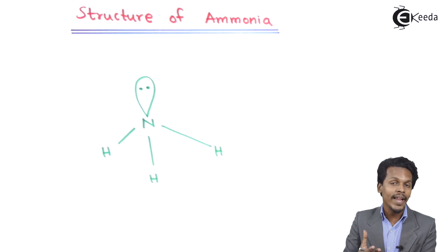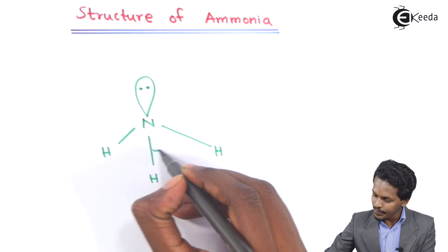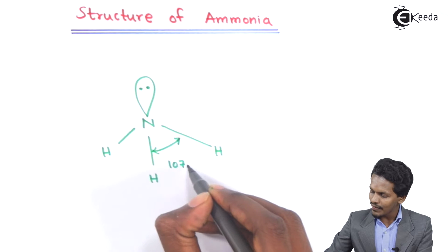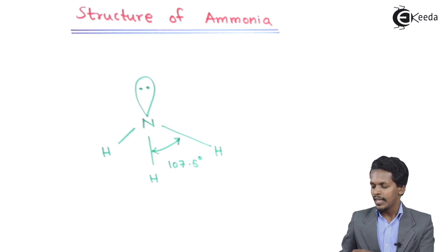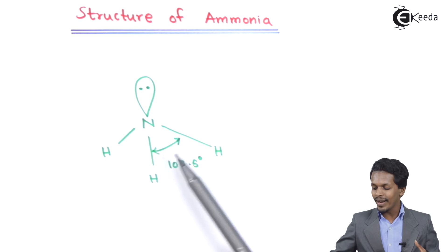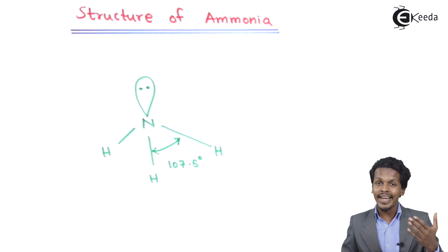So that is the reason that the bond angle actually has been found to be, I am writing over here, it is found to be 107.5 degrees. The reason behind that is the bond angle has been reduced because of the repulsion between this lone pair of electrons and this bond pair. Obviously the bond angle is reduced from 109 degrees 28 minutes to 107.5 degrees.